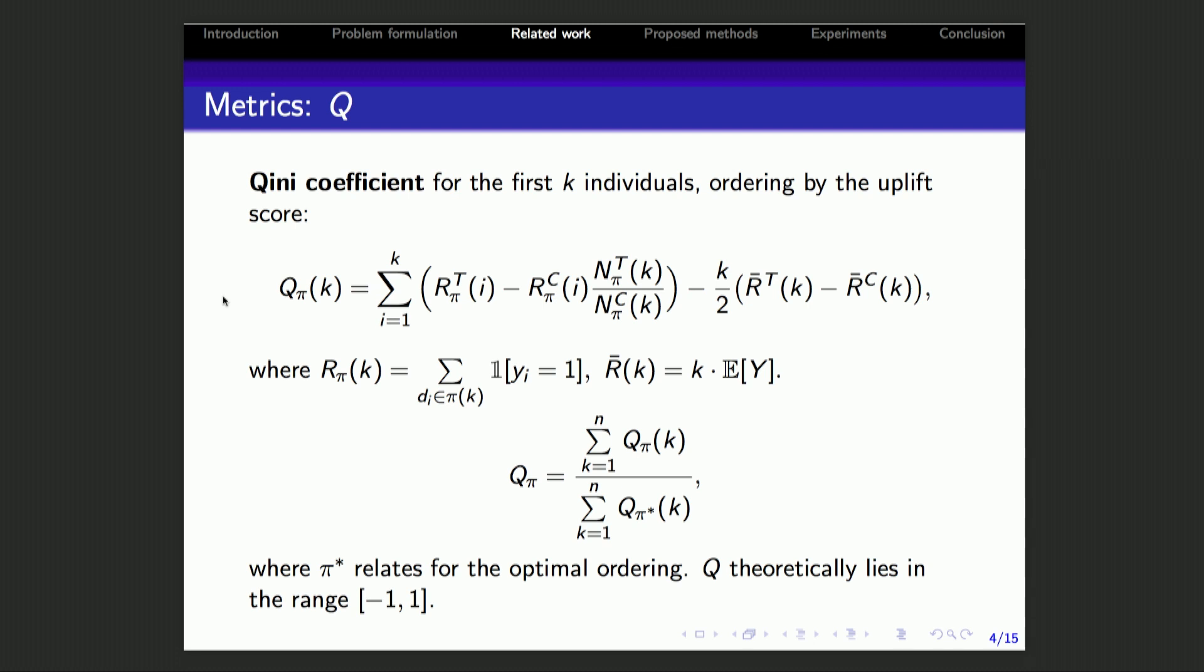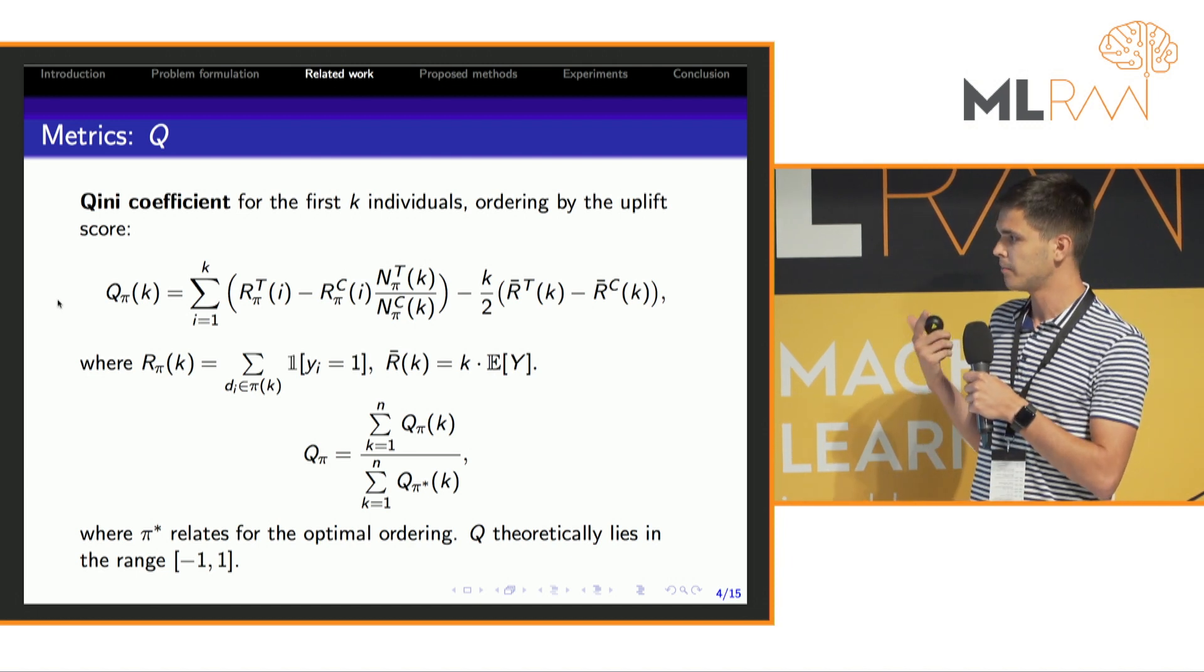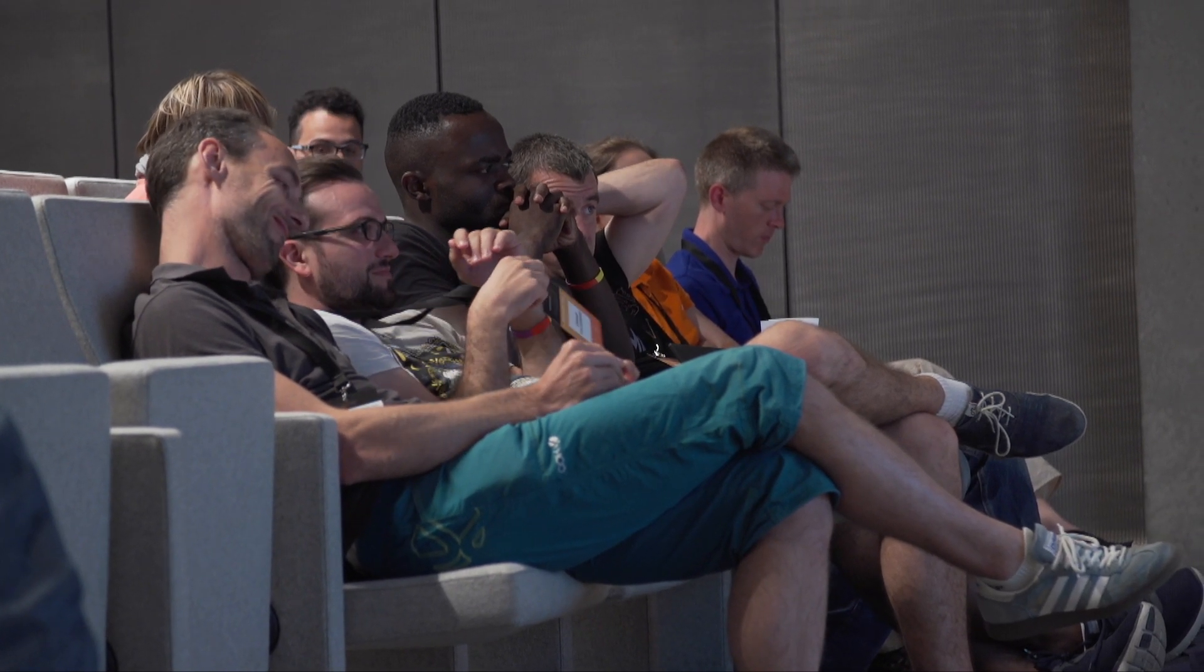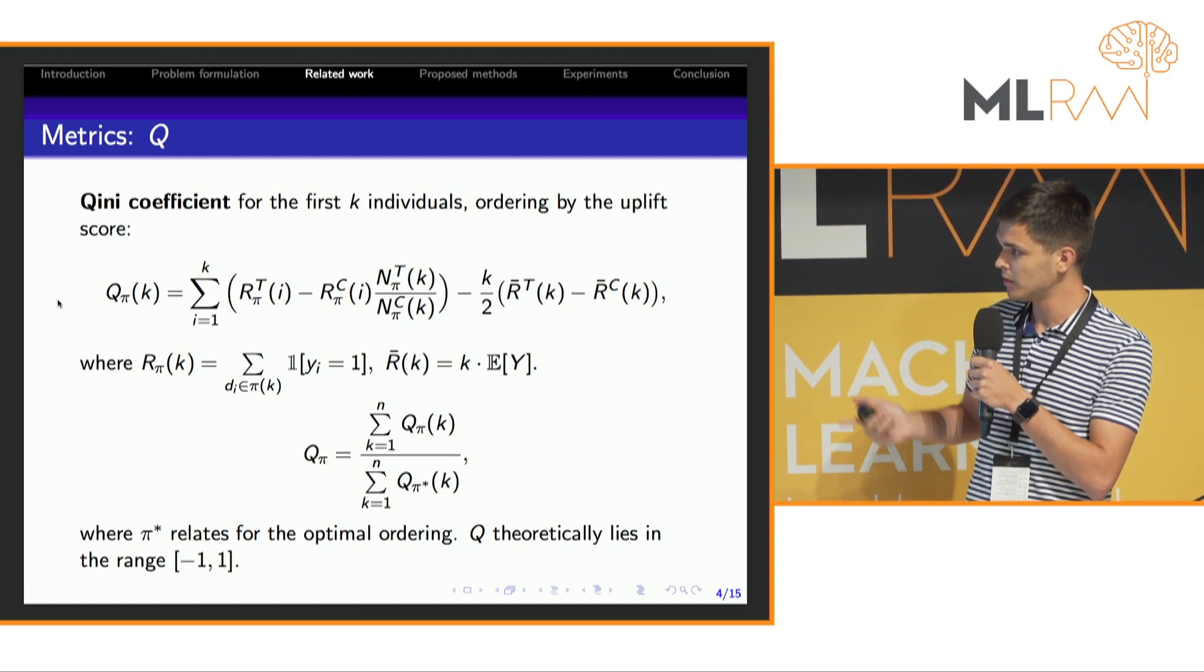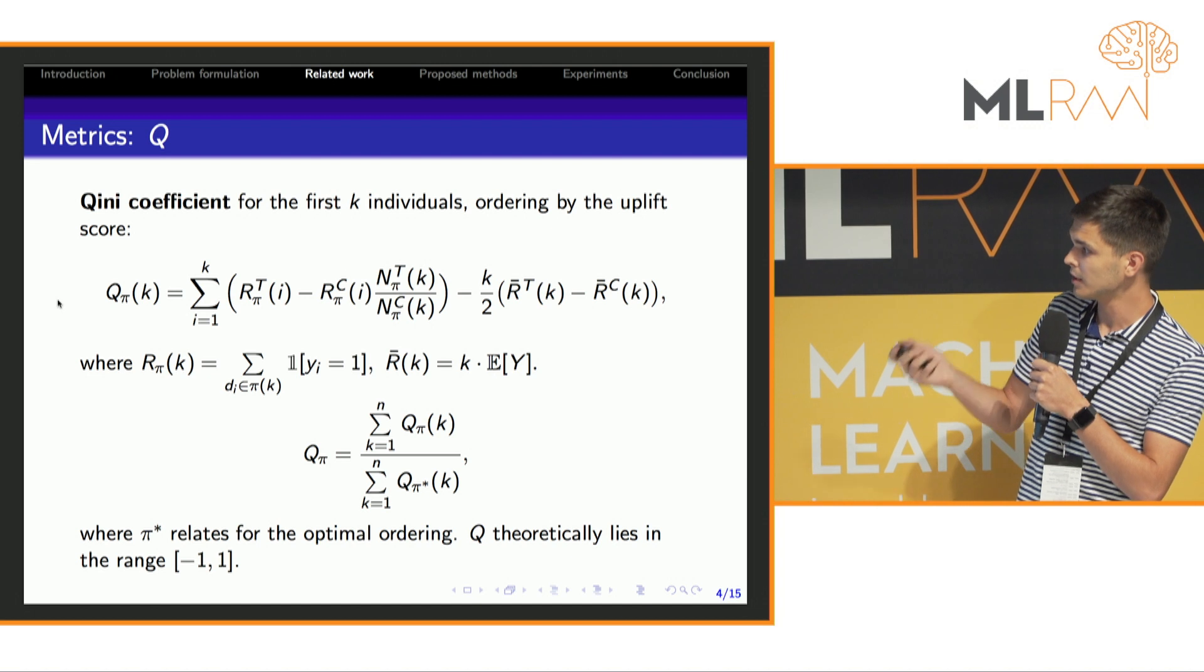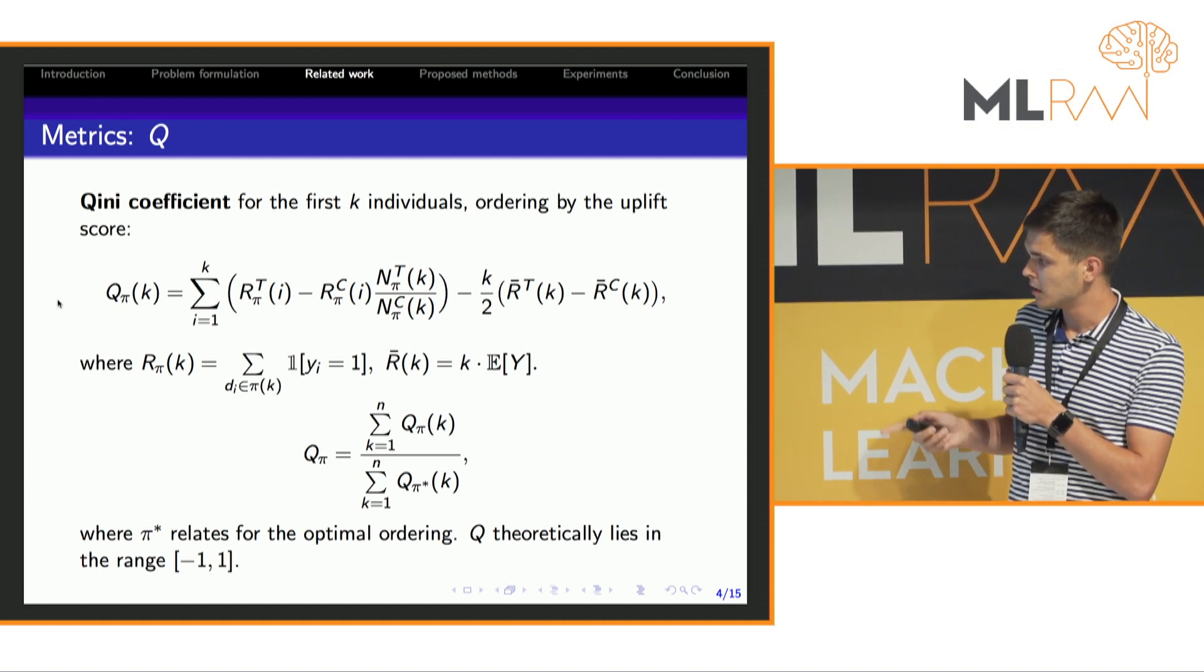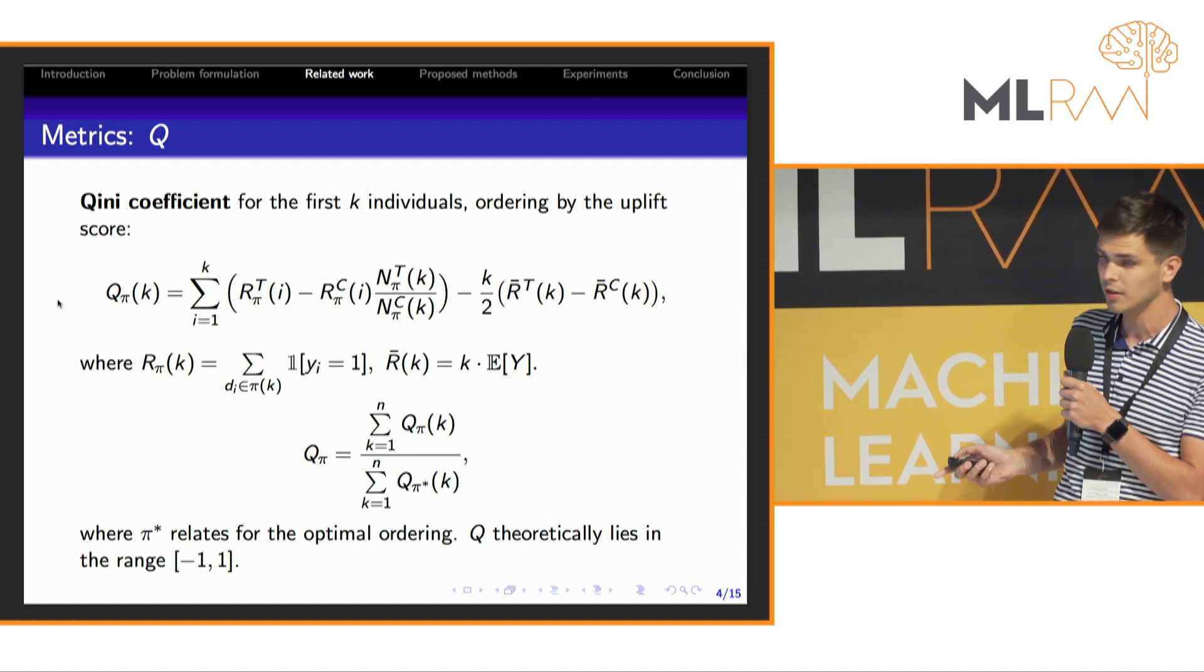Here we decided to use Gini coefficient or Q metric. For the first K individuals sorted by the uplift score, Q_π(K) is as follows. Here R_P(K) is the number of positive outcomes among the first K data points, and R_K̄ is the same value but having random prediction. Also, these two coefficients N_T and N_C correspond to numbers of customers in groups T and C respectively among the first K. The metric intuitively reflects how much higher the difference can be between two numbers of positive outcomes having our model and having the random one. To obtain Q_π(1), one needs to normalize Q_π(K) by the same value but having ideal ordering of the data points.